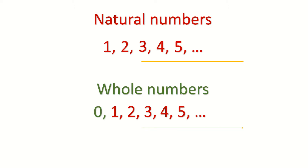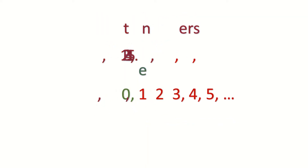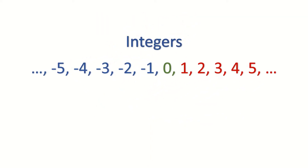Now that we've recapped our natural and whole numbers, let's look at integers. Integers include all the whole and natural numbers from 0 up until infinity, but they also include all the negative whole numbers, like negative 1, negative 2, negative 3, all the way down to negative infinity. But what do integers not include?